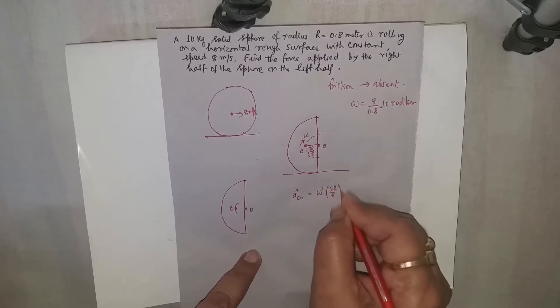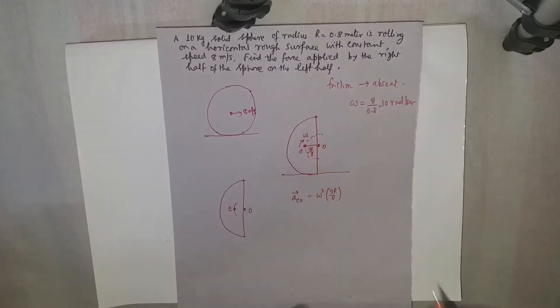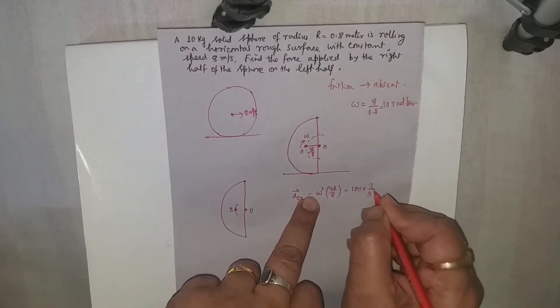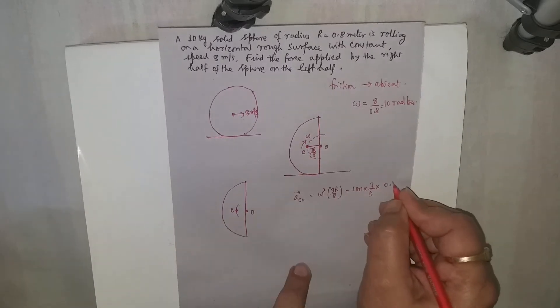Distance is 3R by 8. This is the radius in which it is moving in circular path. So omega squared means 100 into 3 by 8 and R is given as 0.8.